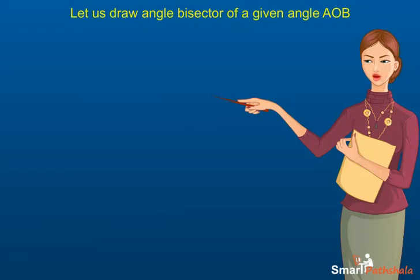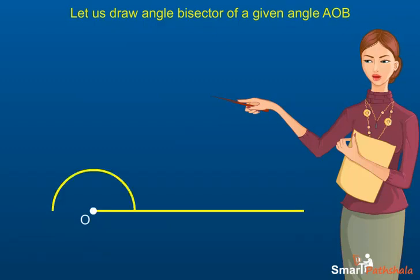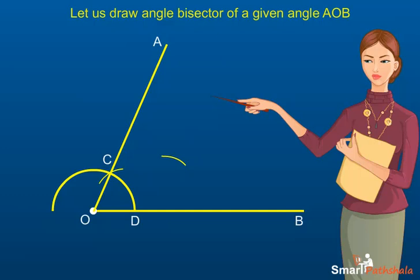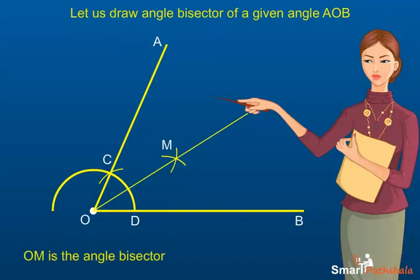Step 1: With O as center, draw a semicircle that cuts both the rays of angle AOB at C and D respectively. Step 2: With C as center and radius more than half of CD, draw an arc in the interior of the angle. Step 3: With the same radius and D as center, draw an arc in the interior of the angle that cuts the previous arc at M. Then OM is the required angle bisector.